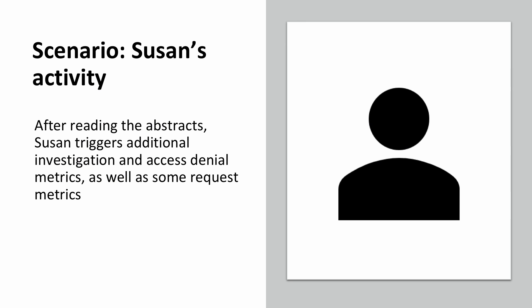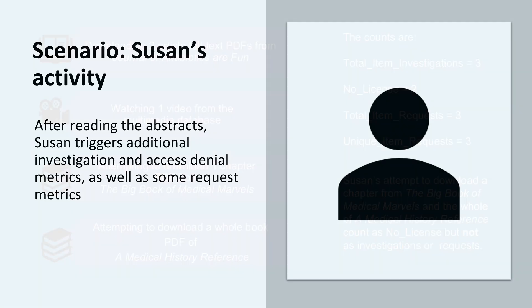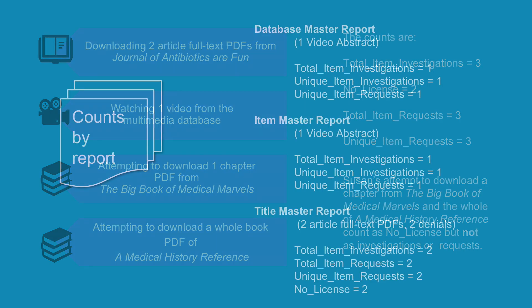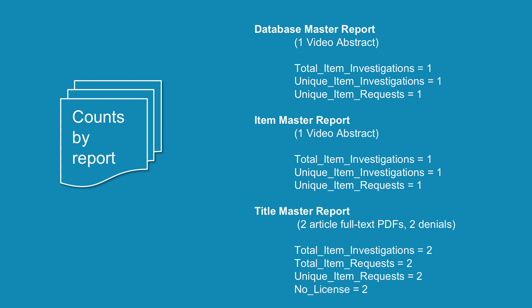After reading the abstracts, Susan triggers additional investigation and access denial metrics, as well as some request metrics, through the following actions. She downloads two article full-text PDFs from Journal of Antibiotics, she watches one video from the multimedia database, and attempts to download one chapter PDF from the Big Book of Medical Marvels. The counts are now 4 total item investigations, 1 no license, 3 total item requests, 3 unique item requests, and 2 unique title requests. Susan's attempt to download a chapter from the Big Book of Medical Marvels counts as an investigation, but does not count as a request. This is because institution Omega has not licensed books, and therefore her access is denied. This is the no license count.